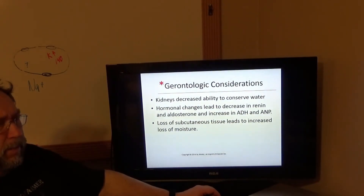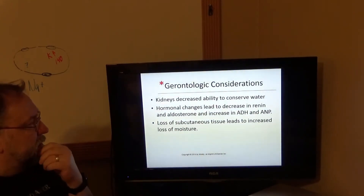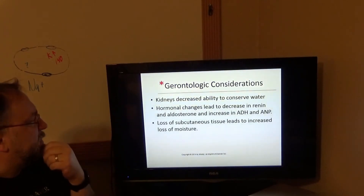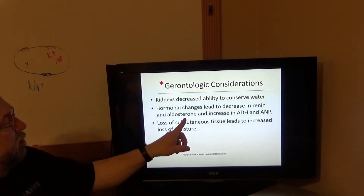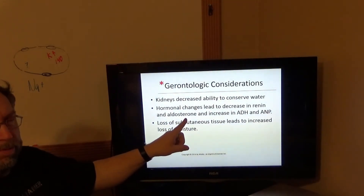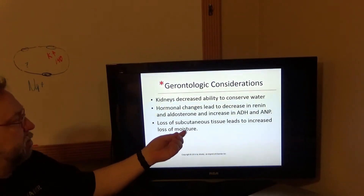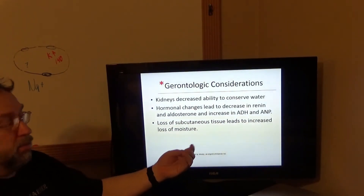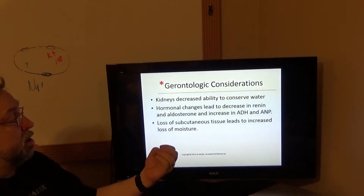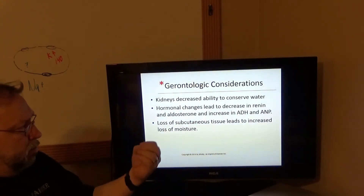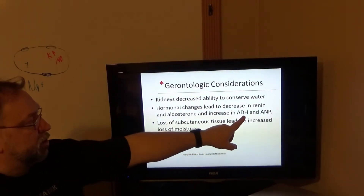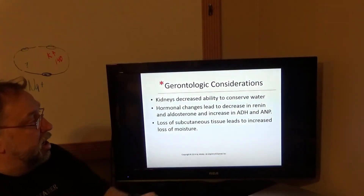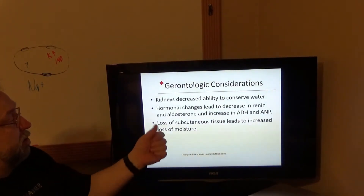There is a video on aldosterone, ADH, and natriuretic peptide — that's ANP or BNP, sometimes called brain natriuretic peptide. Aldosterone causes the reabsorption of sodium, and water follows sodium. ADH — anti-diuretic hormone — causes reabsorption of just water. ANP reverses the aldosterone effects.